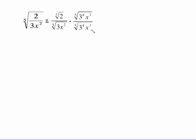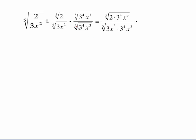You multiply top and bottom by the same value because that really means you're multiplying by one. To multiply this, it's a matter of just looking at the fifth root of something times the fifth root of something — it's just the fifth root of their product. The bottom, we're going to be able to bring something out of the radical sign because we supplied enough factors. The top stays: the fifth root of two times three to the fourth, times x cubed. The bottom: three x squared times three to the fourth x cubed.